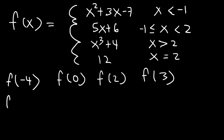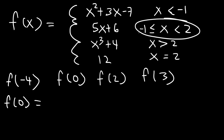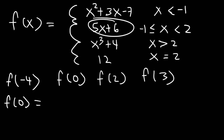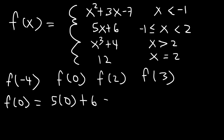Now let's evaluate f of 0. 0 is between negative 1 and 2, so we need to use 5x plus 6. That's 5 times 0 plus 6. 5 times 0 is 0, and 0 plus 6 is 6. So f of 0 is 6.